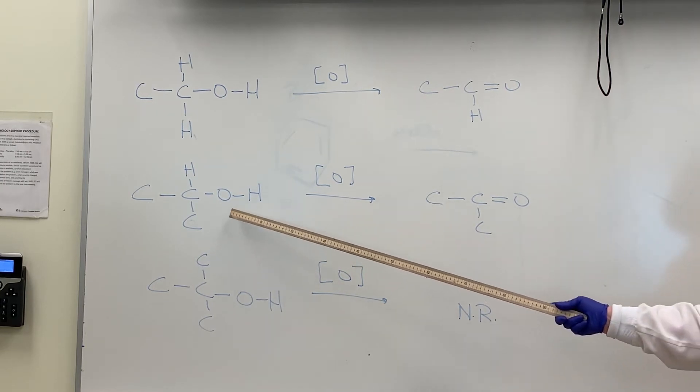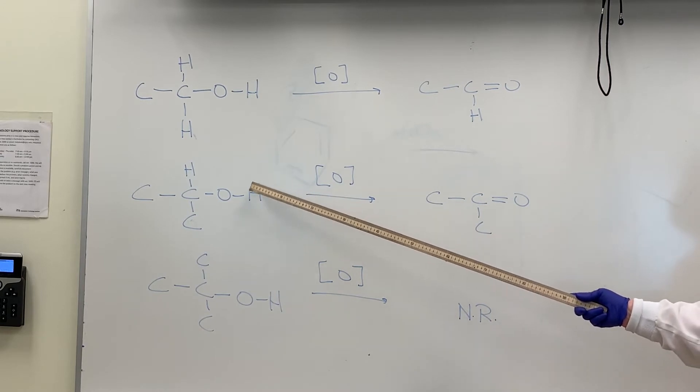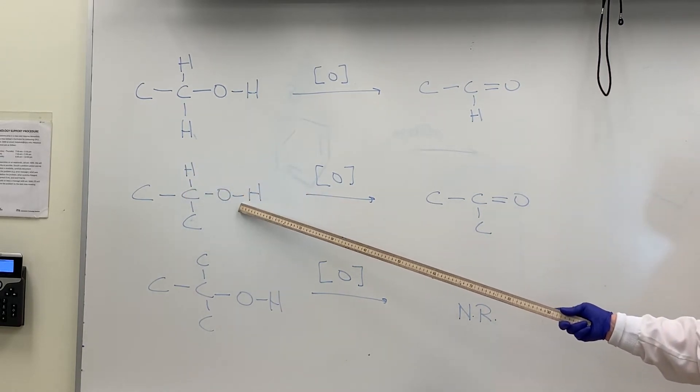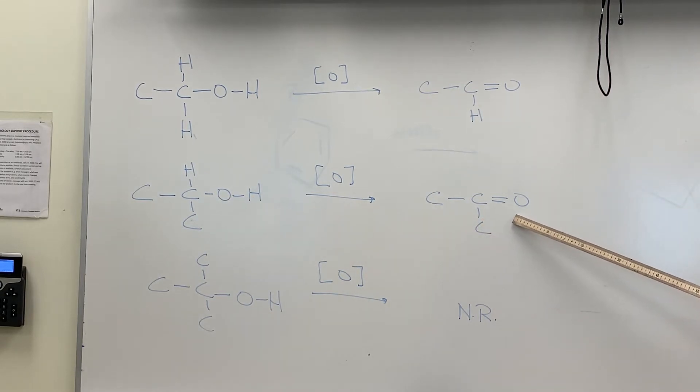If I have a secondary alcohol, again the first step I'm going to remove two hydrogens—hydrogen off the OH, hydrogen off the carbon bonded to the OH, compensate by forming a double bond, and we end up with the ketone.